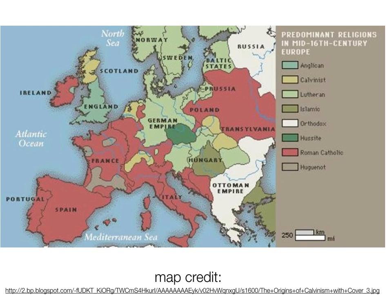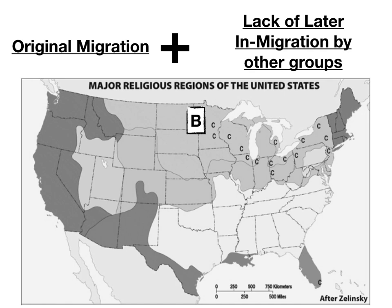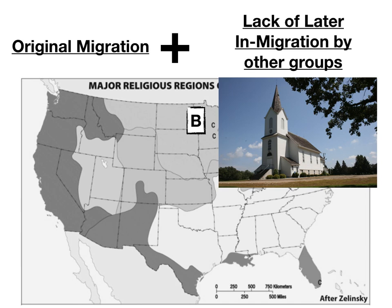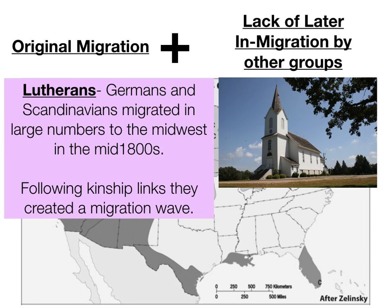The next religion we're going to look at is the Lutherans. Lutheranism really spread throughout Germany and Scandinavia after the Protestant Reformation in the 1500s, and is rooted in the teachings of Martin Luther — a Protestant sect with its hearth around Germany and Scandinavia. Here's a picture of a typical Lutheran church as it looks in the upper Midwest around Minnesota. The Lutherans in the United States were German and Scandinavian immigrants who migrated in large numbers to the Midwest in the mid-1800s. They settled the Midwest as farmers, followed kinship links, eventually creating a migration wave and really settling that area.